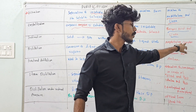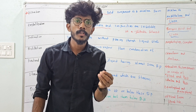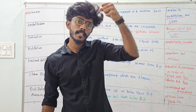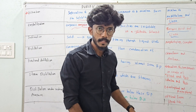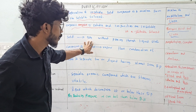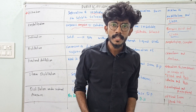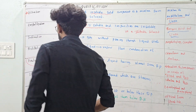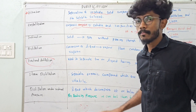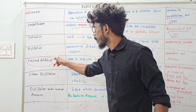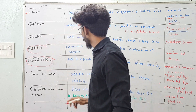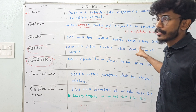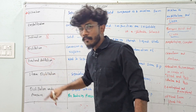Naphthalene and camphor are organic compounds, so you can use the sublimation method. For example, the mixture of a chemical compound — all can go to gas. If you are using naphthalene or camphor, you can use sublimation. Sublimation means you can directly convert the solid to gas without passing through the liquid state.